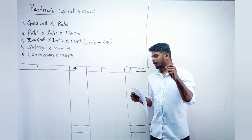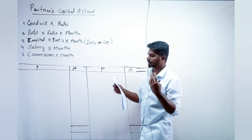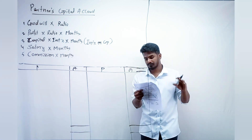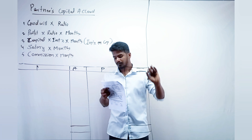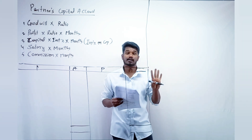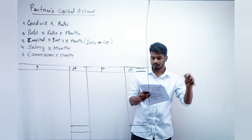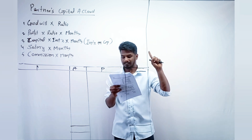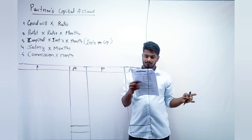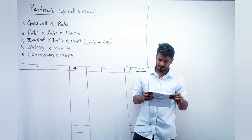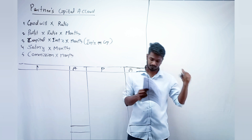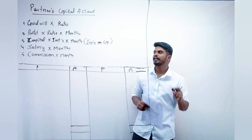This is question number 13. Raja, Rani, and Mantri are partners sharing profit and losses in the ratio 2:2:1. The balance sheet is given, and Raja died on 31st December 2017. Some additional information is given and we need to prepare Raja's capital account.